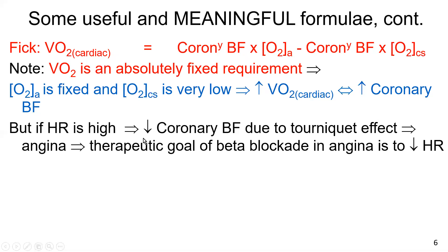But if heart rate is high, coronary blood flow will be reduced due to the so-called tourniquet effect. Now what happens here is when the heart is pumping during systole, the heart muscle squeezes down on the small coronary vessels and chokes off blood flow into those coronary vessels during the contractile phase of the cardiac cycle. And this is called the tourniquet effect.